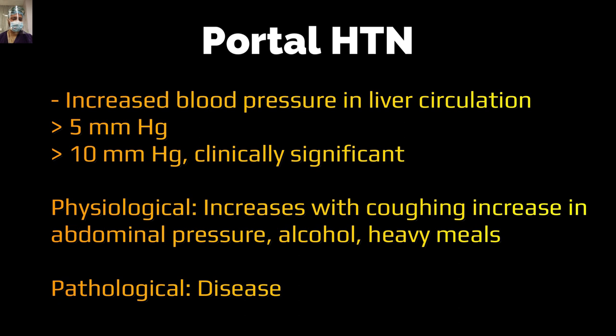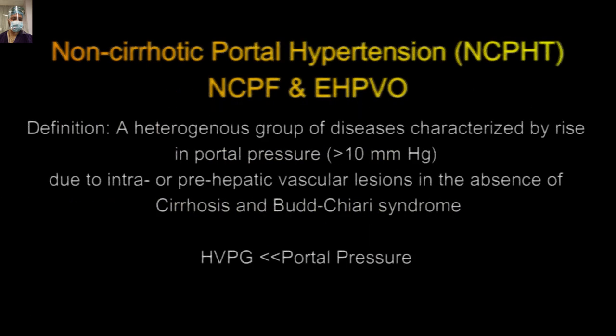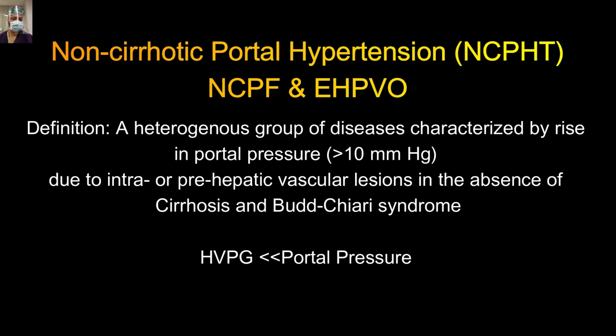As all of you know, the normal portal pressure is between 1 to 4 mmHg. If it is more than 5, it is called portal hypertension, and when it crosses more than 10 millimeters of mercury it becomes clinically relevant. The term non-cirrhotic portal hypertension, that is NCPH, encompasses two entities: non-cirrhotic portal fibrosis (NCPF) and extra-hepatic portal vein obstruction (EHPBO). It is a heterogeneous group of diseases in which portal pressure is more than 10 due to intra- or pre-hepatic vascular lesions in the absence of cirrhosis or Budd-Chiari syndrome.